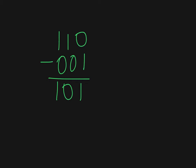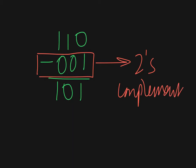So in order to get the two's complement, we take this little chunk here and we put it through a bunch of processes until we get to the two's complement. So we have 1, 1, 0 minus 0, 0, 1.